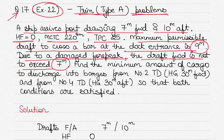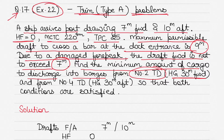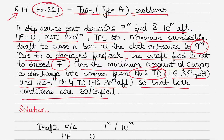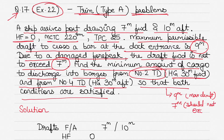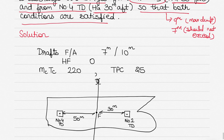Due to a damaged forepeak, the draft forward is not to exceed 7 meters. The current draft is 7 meters forward, and the forward draft cannot exceed that — it can be less, but not more. Find the minimum cargo to discharge from Number 2 'tween deck (HG 30 meters forward) and Number 4 'tween deck (HG 30 meters aft) so that both conditions are satisfied: maximum draft not more than 9 meters and forward draft not exceeding 7 meters.